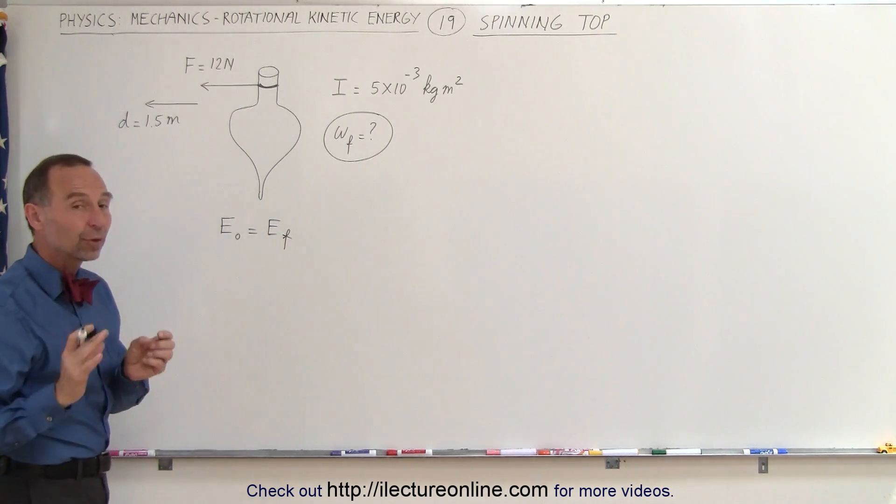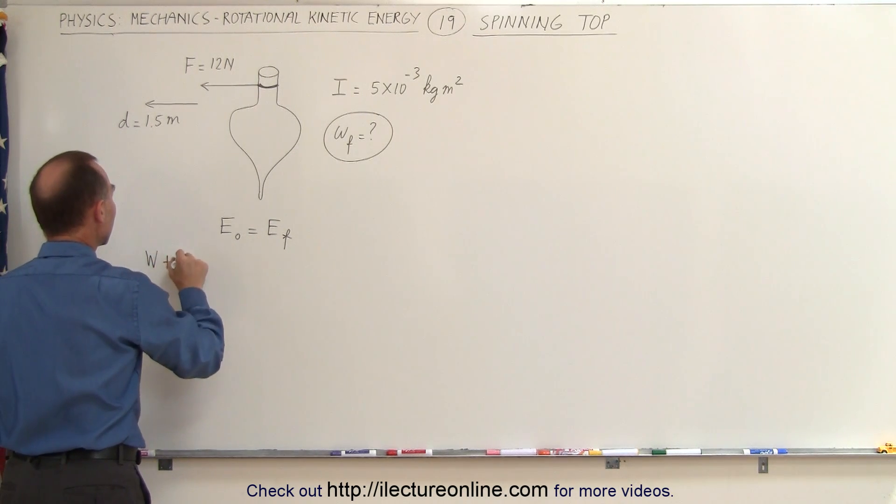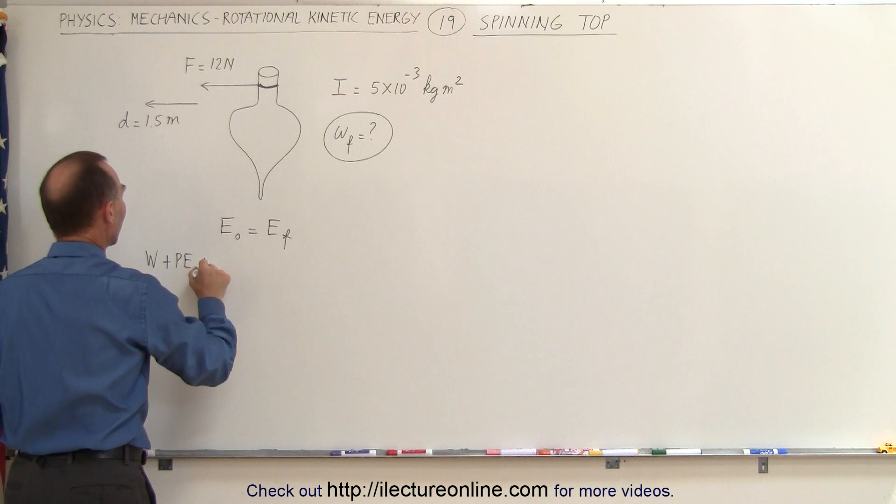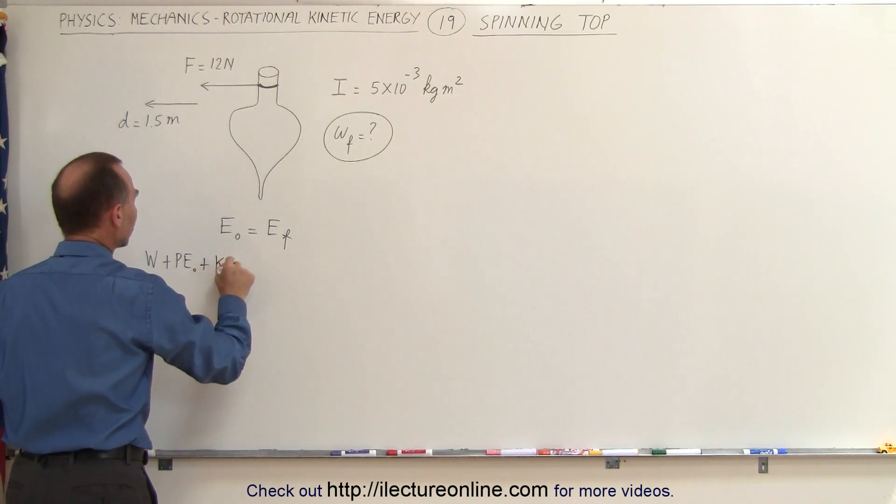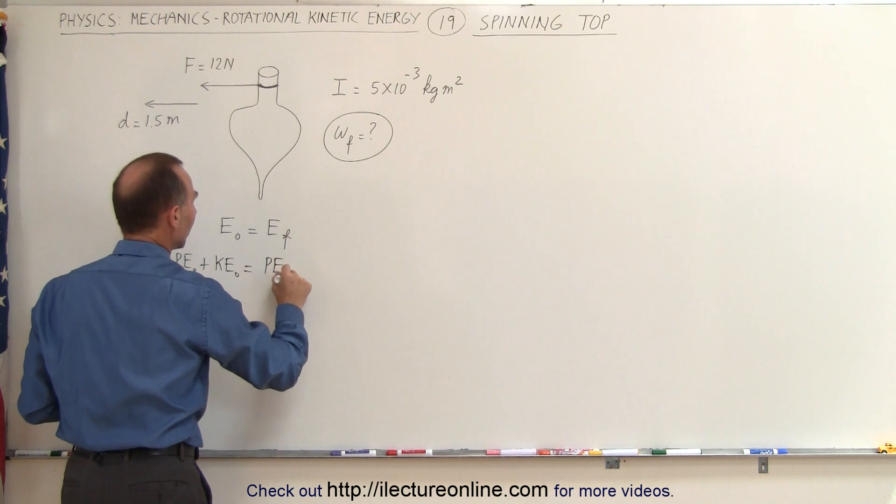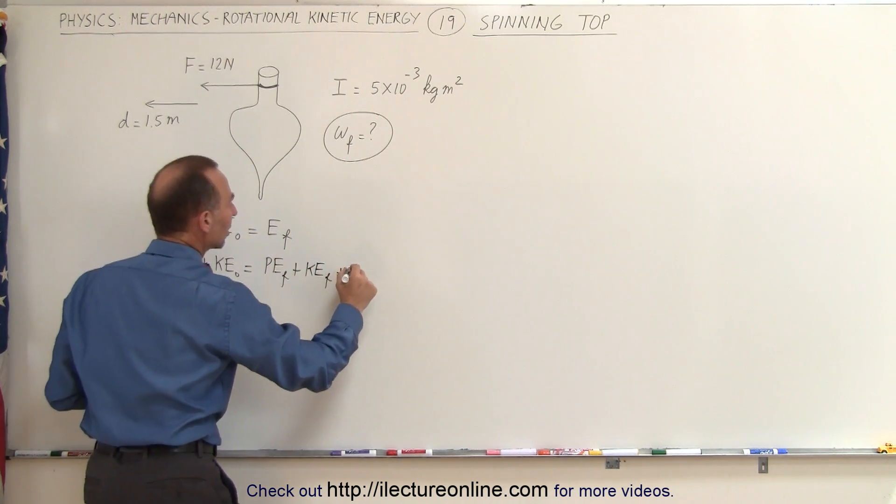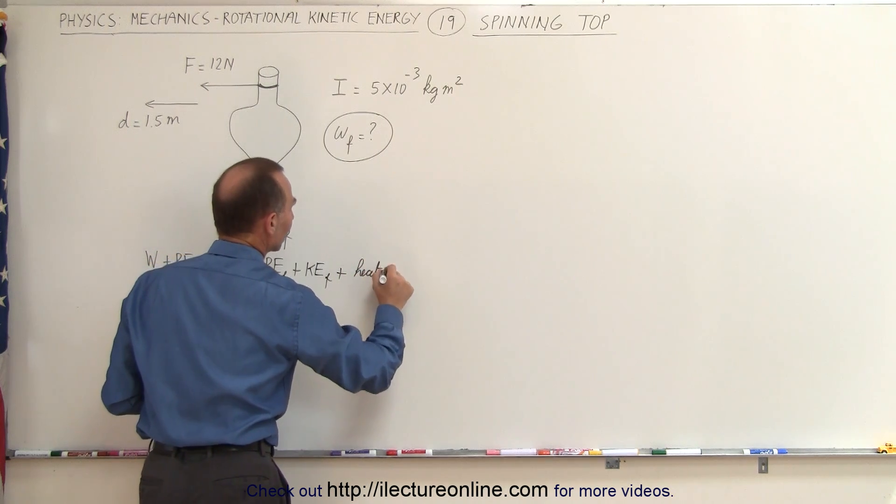Now the initial energy can come from three sources: it can come from any work put into the system, plus any initial potential energy you may have, plus any initial kinetic energy you may have. And that equals the final potential energy plus the final kinetic energy plus any heat lost if there's any friction.